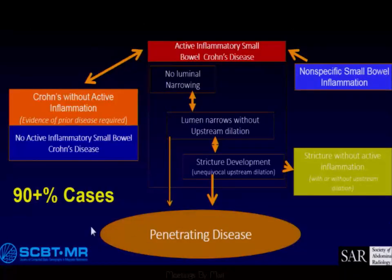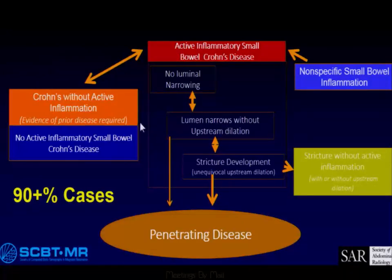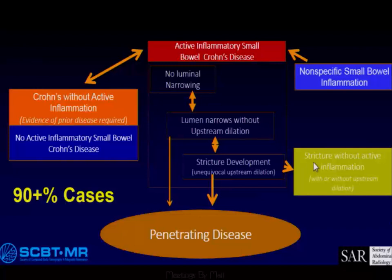Most of the time you'll see active inflammatory or nonspecific findings. Without luminal narrowing, it'll go back and forth to luminal narrowing and then down into stricture development. In my experience, stricture disease does not usually revert. Penetrating disease is really about stricture with active inflammation. You won't see much burned-out stricture without active inflammation because most of these people are not that sick and have accommodated to their disease.